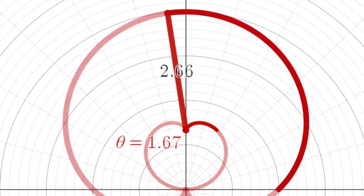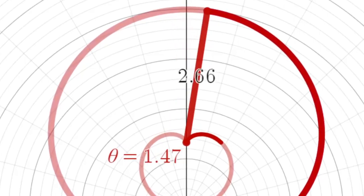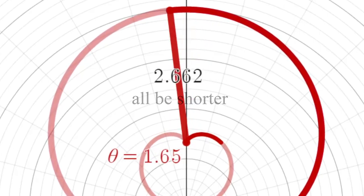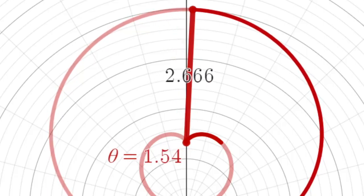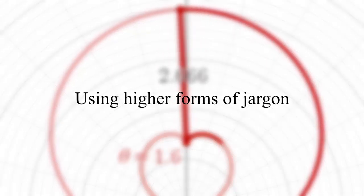If we draw any other line besides this, those other lines would all be shorter than the line on 0, 2 thirds. By using higher forms of jargon...